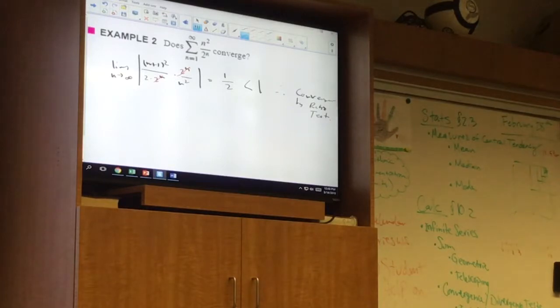Okay, so again, we have used the ratio test to show that this infinite series is convergent. Really, it's absolutely convergent and therefore convergent.